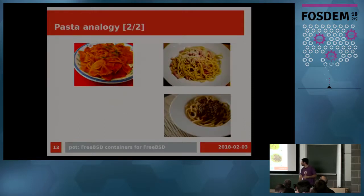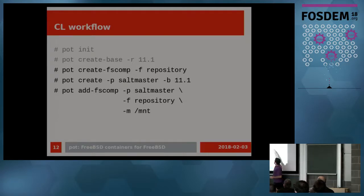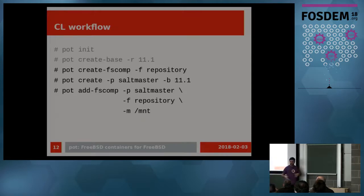Q: What does the `-P` option mean? A: P is the pot name. F is the name of the filesystem component — so here I'm adding a system component called 'repository' to this pot. And this is the mount point. I use P for the pot name, F for filesystem components, B for basis — I'm trying to be consistent across all command lines.